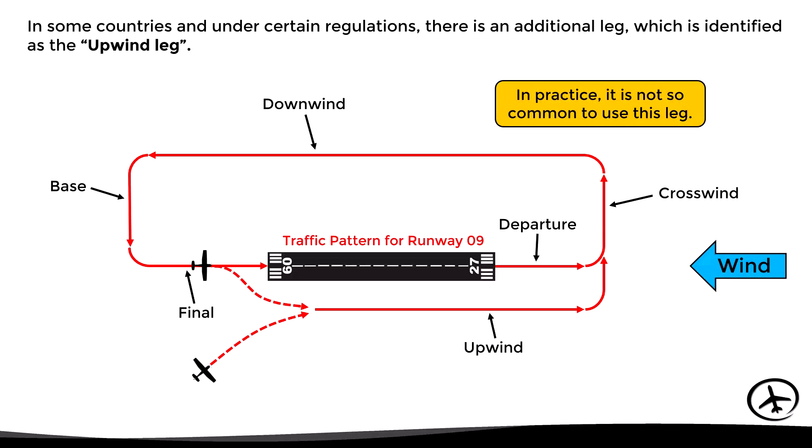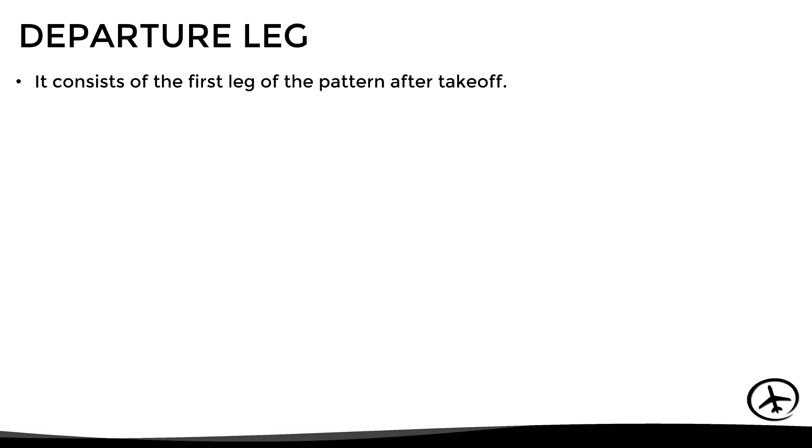That's why sometimes there is confusion between the departure and upwind legs. So having seen a general overview of the traffic pattern, let's now take a closer look at each of the legs and some rules of thumb to fly them correctly. Let's start with the departure leg, which as we already know is the first leg of the pattern after takeoff.